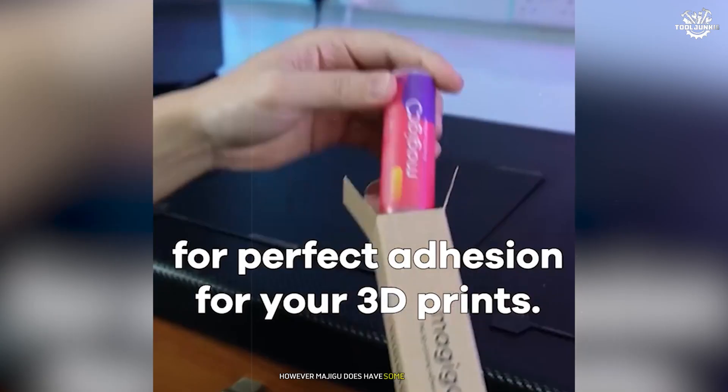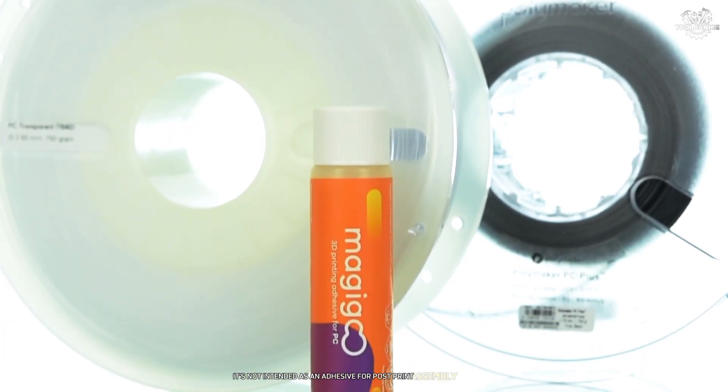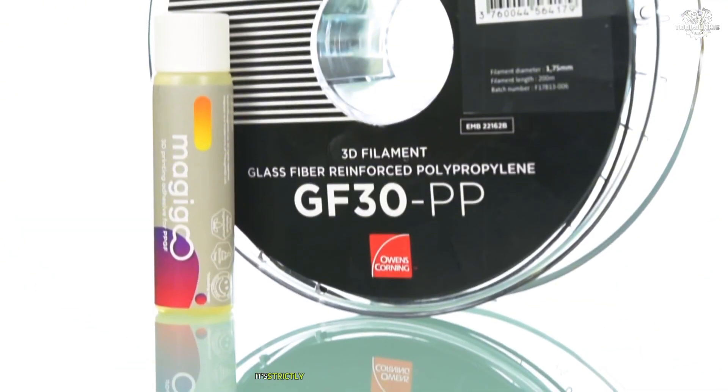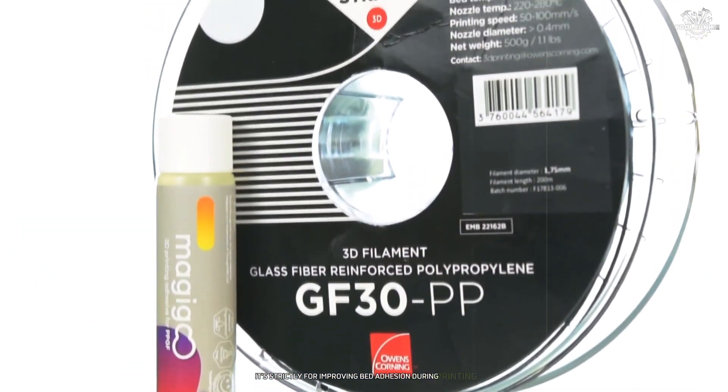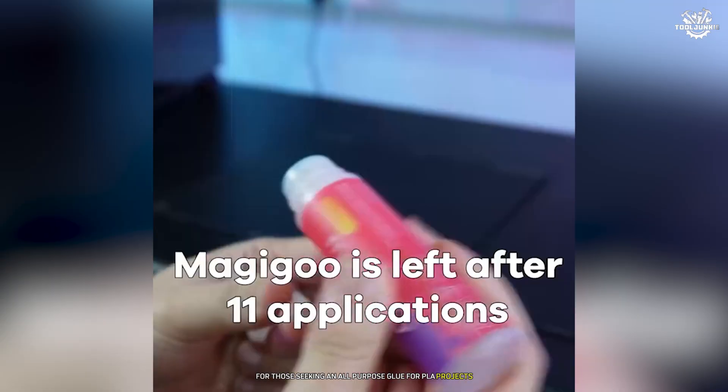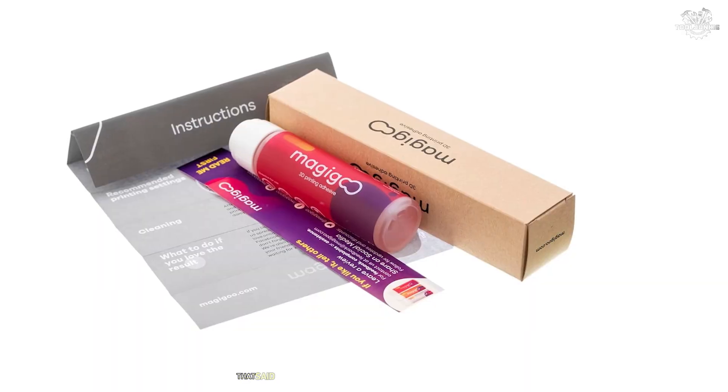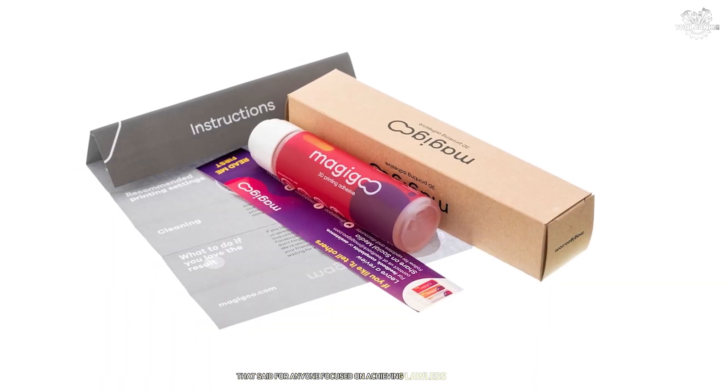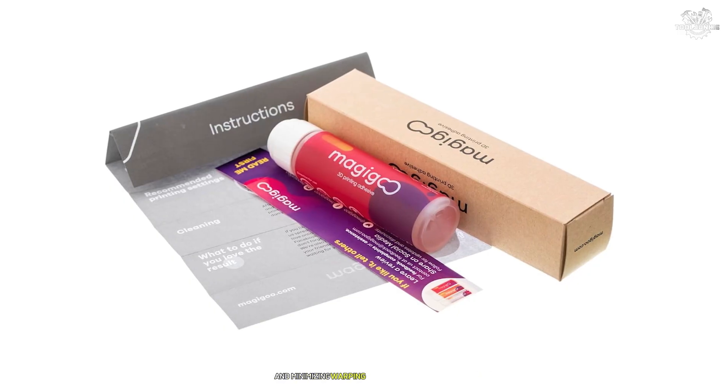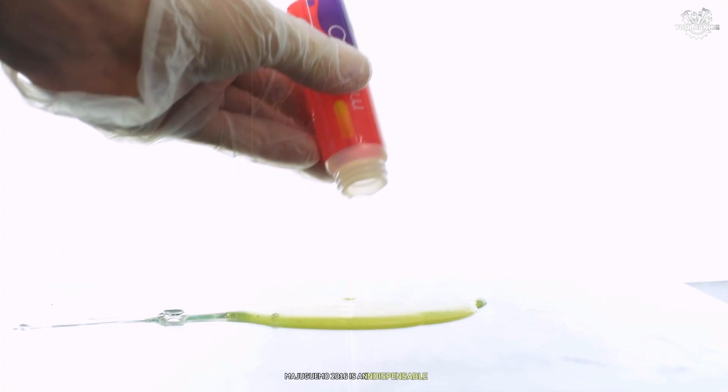However, MAJIGOO does have some limitations. It's not intended as an adhesive for post-print assembly or repairs. It's strictly for improving bed adhesion during printing. For those seeking an all-purpose glue for PLA projects beyond printing adhesion, this product may not meet their needs. That said, for anyone focused on achieving flawless first layers and minimizing warping issues during printing, MAJIGOO MO 2016 is an indispensable tool.